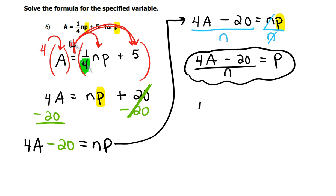If you wanted to, you could distribute the division and say 4A over N minus 20 over N, which would equal P.